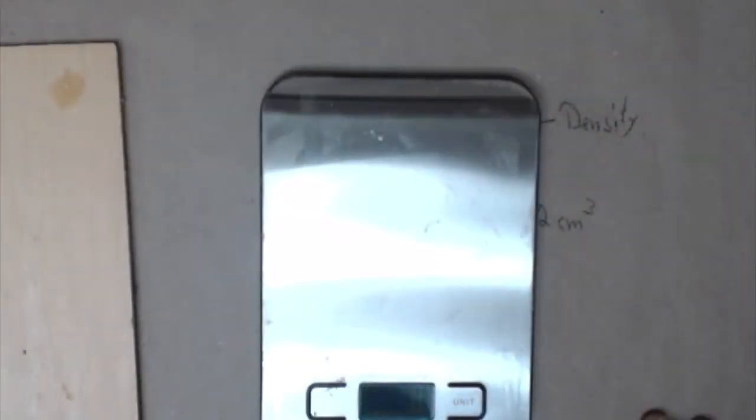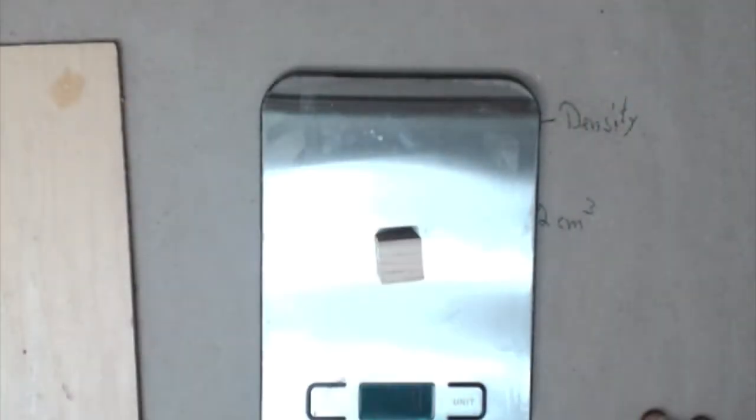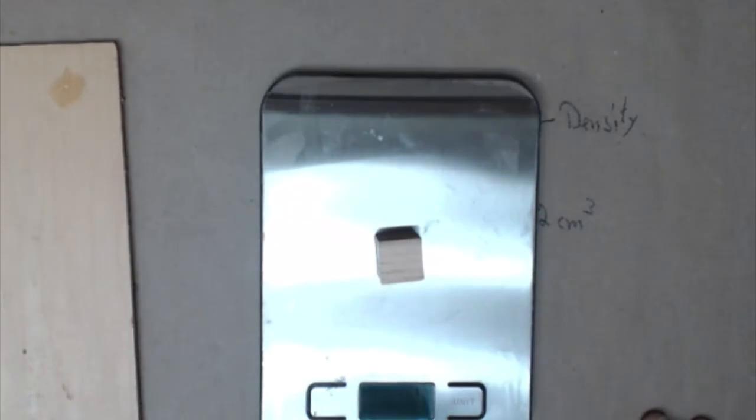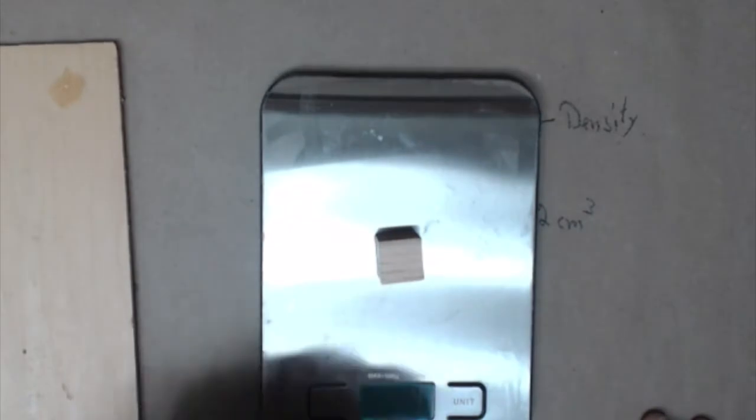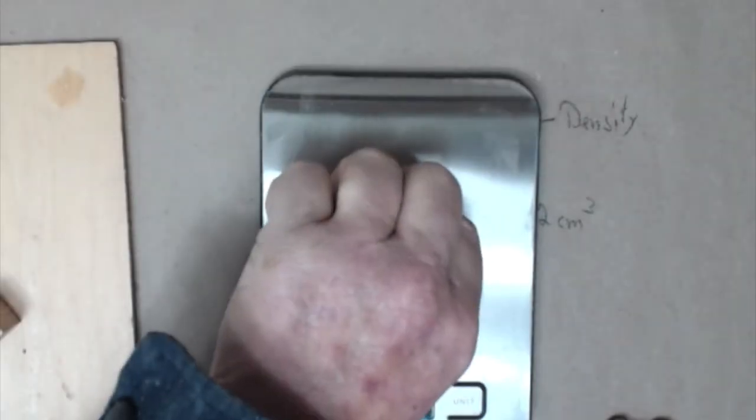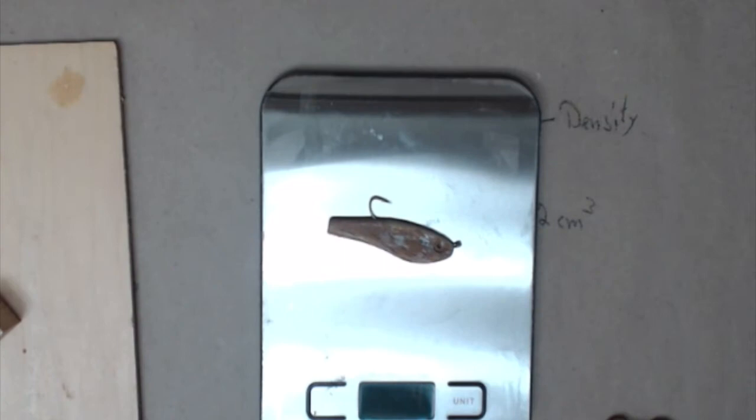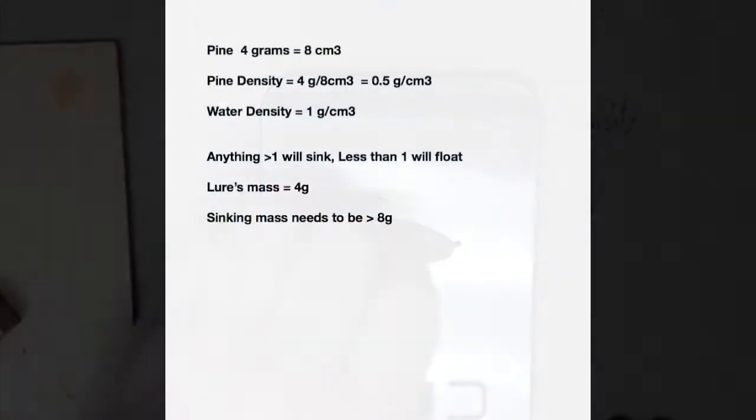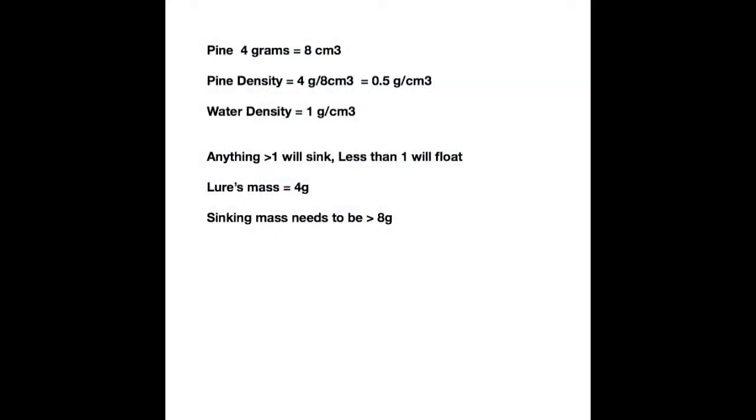To get a handle on how this bait is going to flow I want it to sink a little. Start off by getting the density of pine using a scale and measuring it, and then getting the mass of the lure. Everything has to be in metrics of course for it to work. So a little math but I won't bog you down with it.